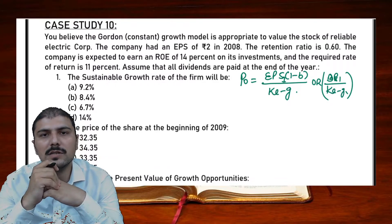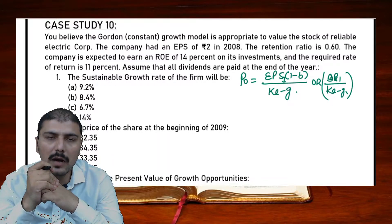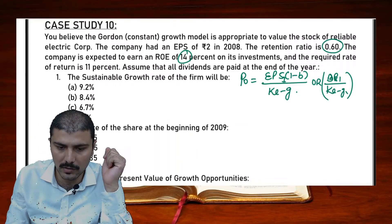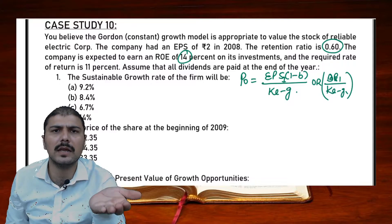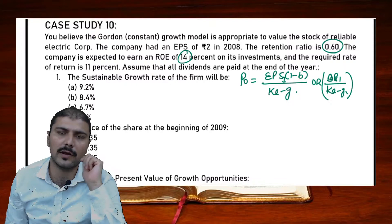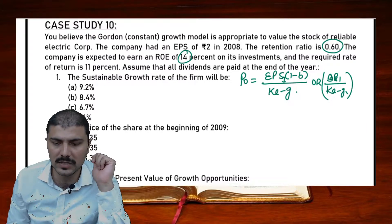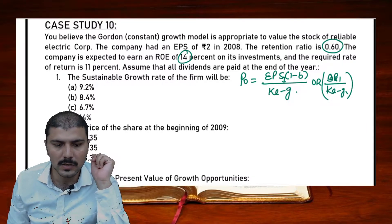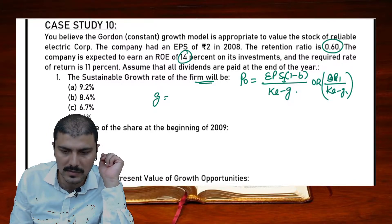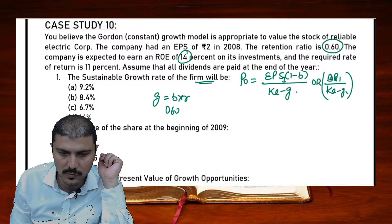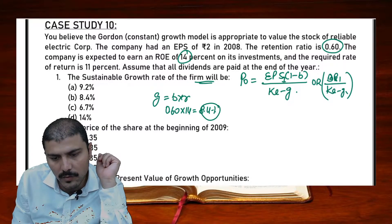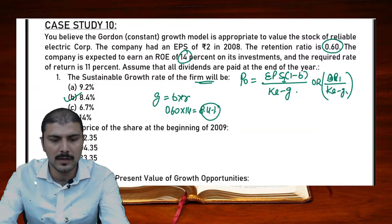The growth rate g = b × r, where b is the retention ratio and r is the return on equity. The company grows based on its retention and the rate of return generated on those retained earnings. So the sustainable growth rate is: g = 0.60 × 14 = 8.4 percent approximately.